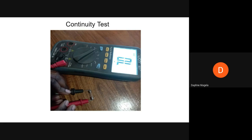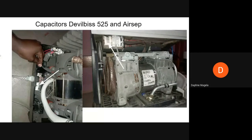A defective compressor capacitor can prevent the compressor from starting or cause it to stop running erratically. To replace the capacitor: turn off the concentrator, disconnect the power cord, remove the side and lower front panels, and locate the compressor capacitor. In the DeVilbiss 525 it is found just beneath the power cable connection; in the AirSep it is mounted on top of the compressor with a cable tie. Disconnect the two leads, slide the capacitor out, use a capacitance meter to verify it is defective, then install the new capacitor by reconnecting the leads and sliding it into place.